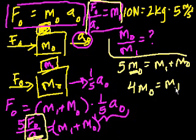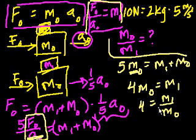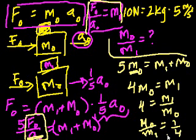You get 4m0 is equal to m1. You could divide both sides by m0, and you get 4 is equal to m1 over m0. And you can invert this relationship, and you can get m0 over m sub 1 is equal to 1 fourth. So what we learned is the ratio of the old mass to the new mass is 1 to 4, and that's the problem.